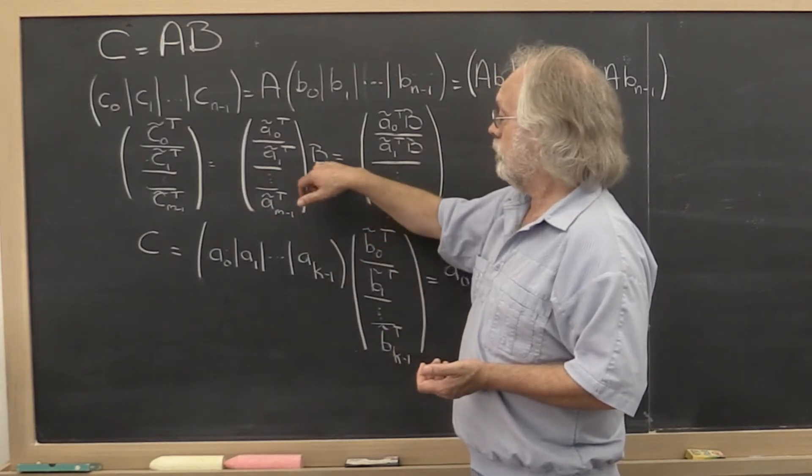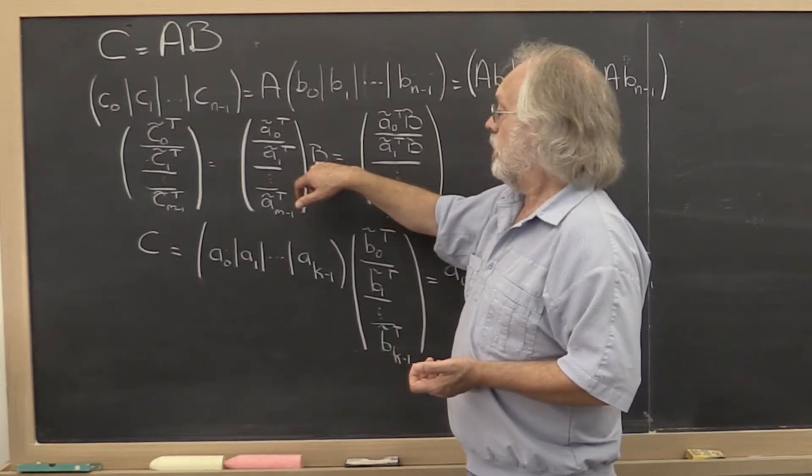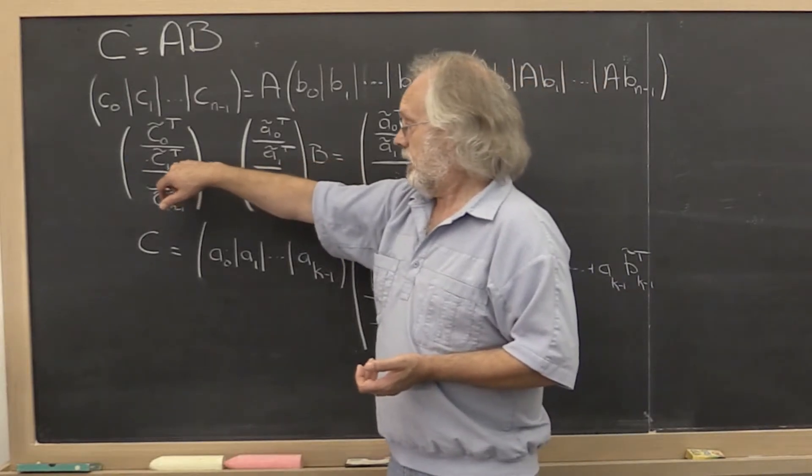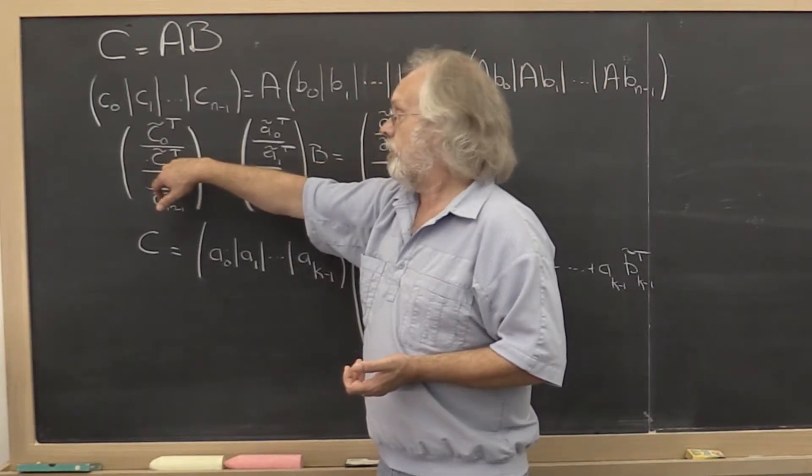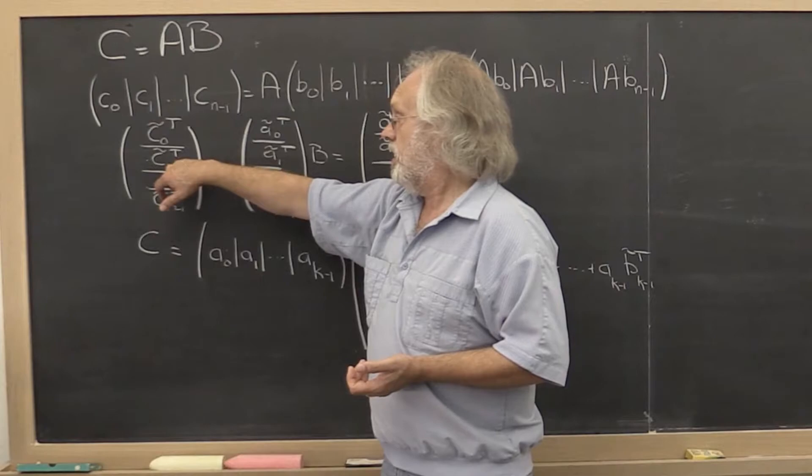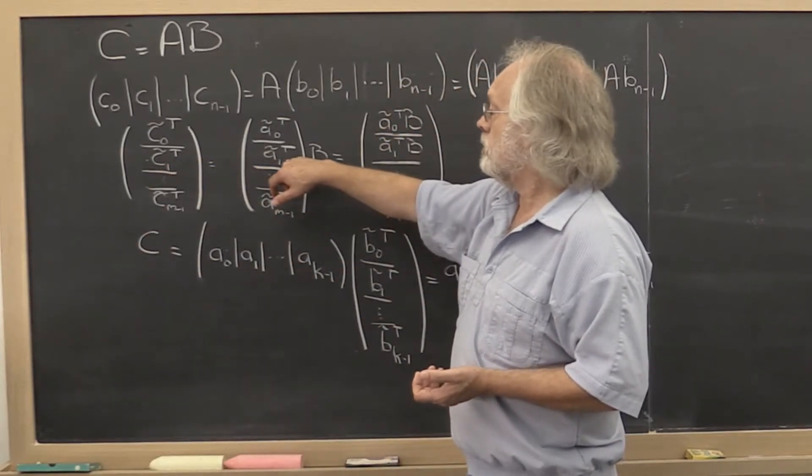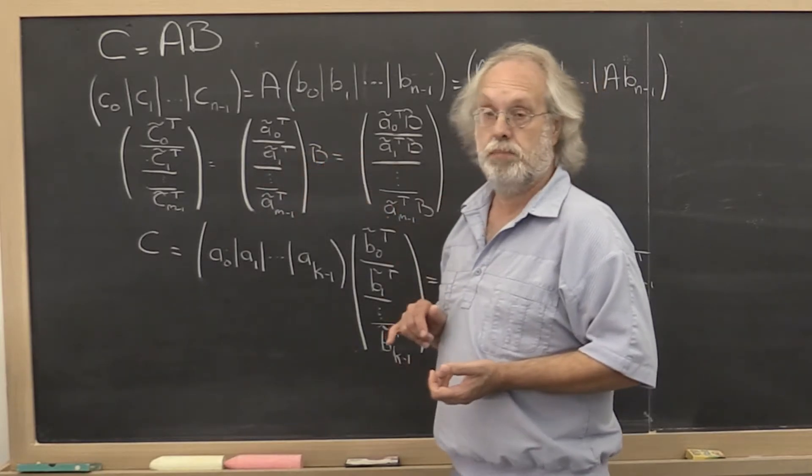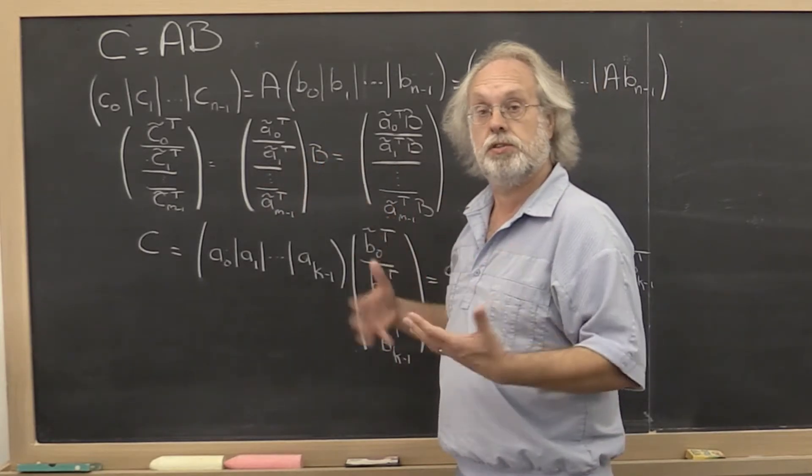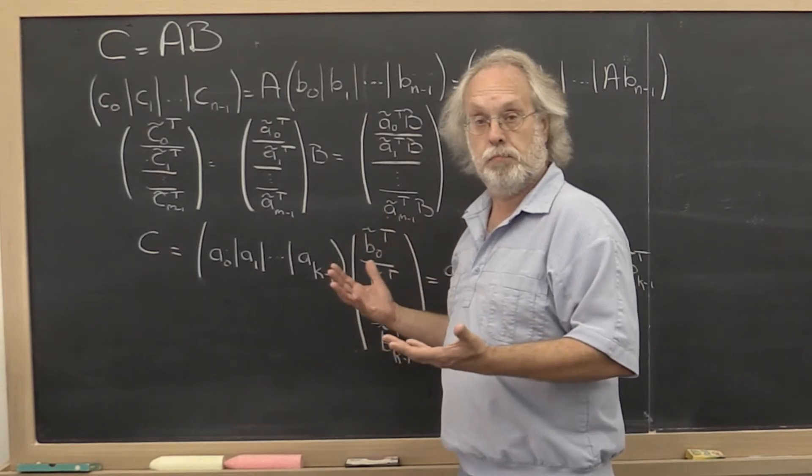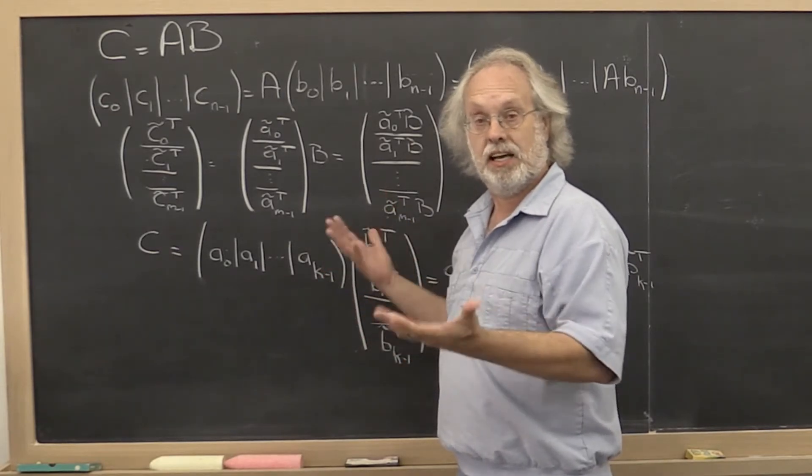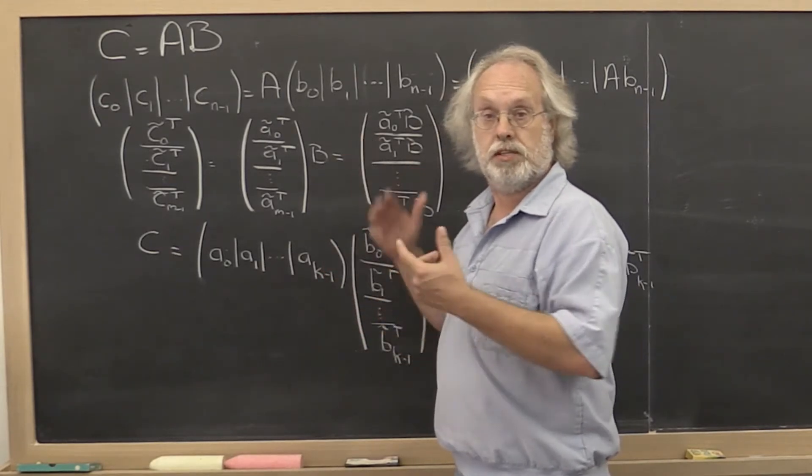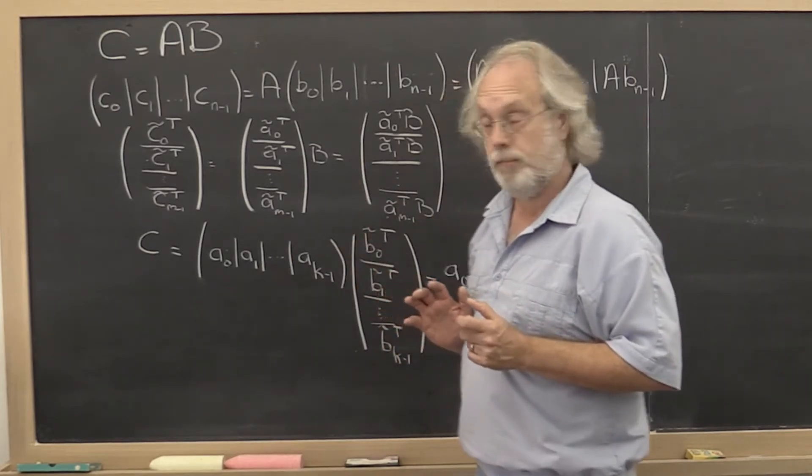And if we don't partition B, then we notice that if you look at any of the rows of matrix C, it can be computed by multiplying the corresponding row of A times the matrix B. And this is just a different way of looking at matrix-to-matrix multiply by slicing and dicing, as we call it, the matrices in different directions.